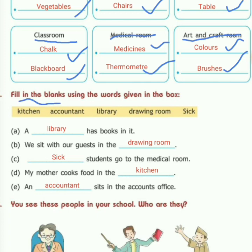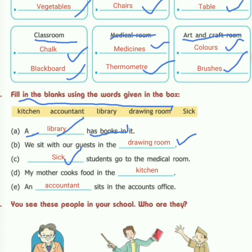Fill in the blanks using the words given in the box. Part A: a blank has books in it — the answer is library. Part B: we sit with our guest in the blank — the answer is drawing room. Part C: blank students go to the medical room — those who are sick. Sick means those who are not well. Part D: my mother cooks food in the blank — the answer is kitchen.